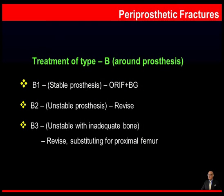Most of this talk will dwell on the treatment of type B fractures — fractures that occur around the tip of the prosthesis — which are by far the commonest fractures in clinical practice. B1 is a stable prosthesis where one can consider internal fixation with bone grafting. B2 is an unstable prosthesis with adequate bone stock, requiring revision of the implant. B3 has an unstable implant with inadequate bone stock; in these cases, we not only have to revise but must substitute the proximal femur.